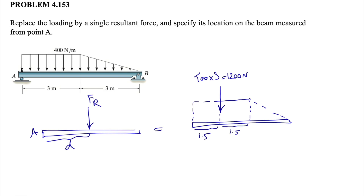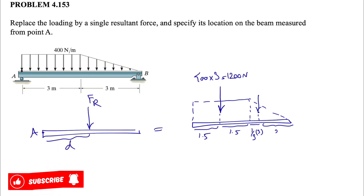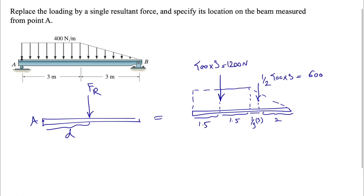For the rectangle, the force is 400 times 3, giving 1200 N, applied at 1.5m from point A. For the triangle, the centroid is at one third of three from the right end, which is one meter, so the distance from point A is two meters. The triangle force is half of 400 times three, which equals 600 N.